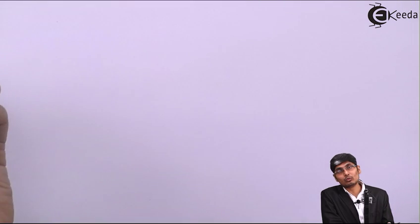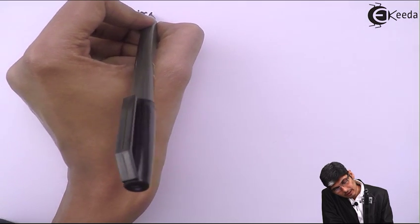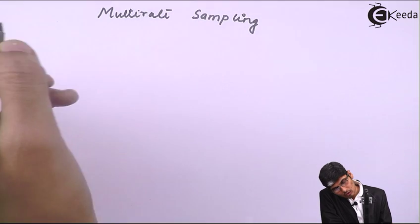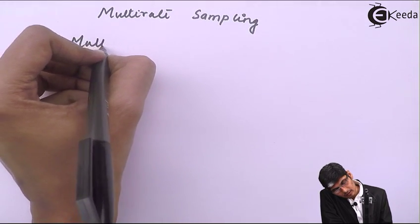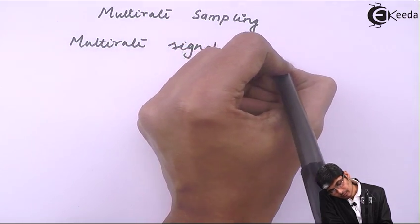Hello friends, today we are going to start a very new topic and a very upcoming research topic called multi-rate signal processing. This chapter contains various new techniques of implementing various sampling methods. Let us first introduce what we mean by multi-rate sampling, or how to view a multi-rate sampling system. Today onwards we are going to see multi-rate sampling, or as it is sometimes called, multi-rate signal processing.